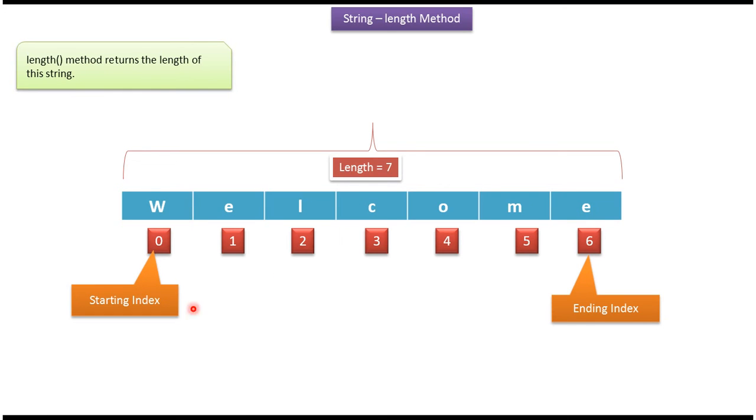0 is the starting index and ending index is 6. The length of this string is 7. Using the length method, we can find the length of the string.